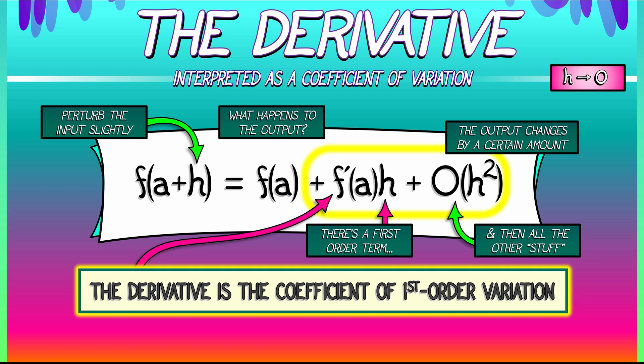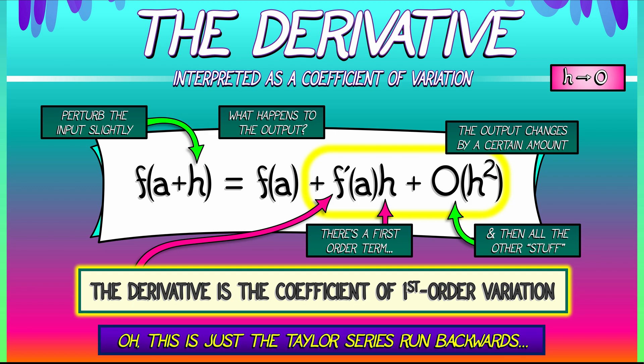At which point you might say: wait a minute — this is just the Taylor series thing, but run backwards. Instead of talking about the Taylor series in terms of the derivatives, we're taking the function, looking at what happens to the asymptotics of the output when we change the input, and pulling out that first-order term. Whatever that coefficient in front of the first-order term is — that's the derivative.